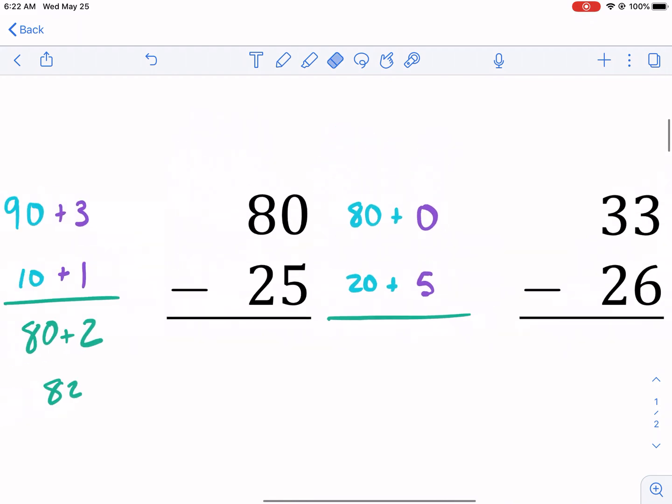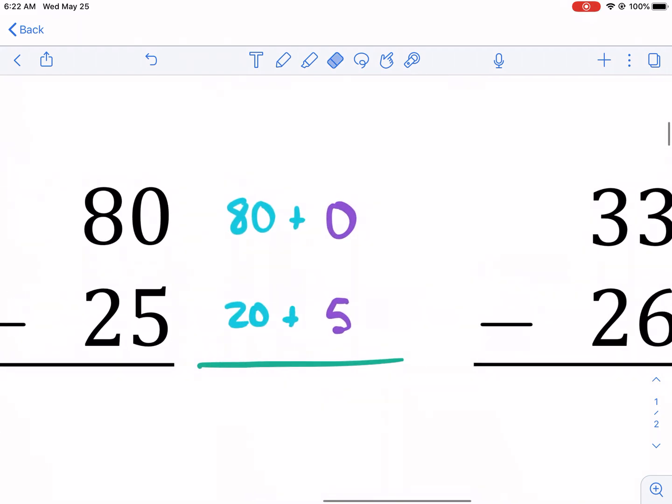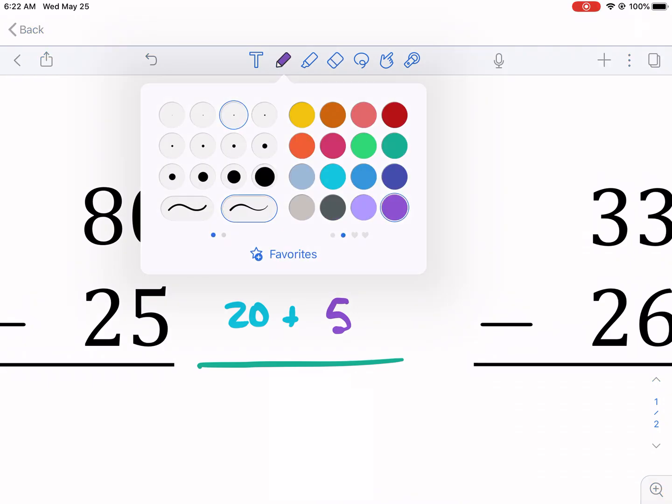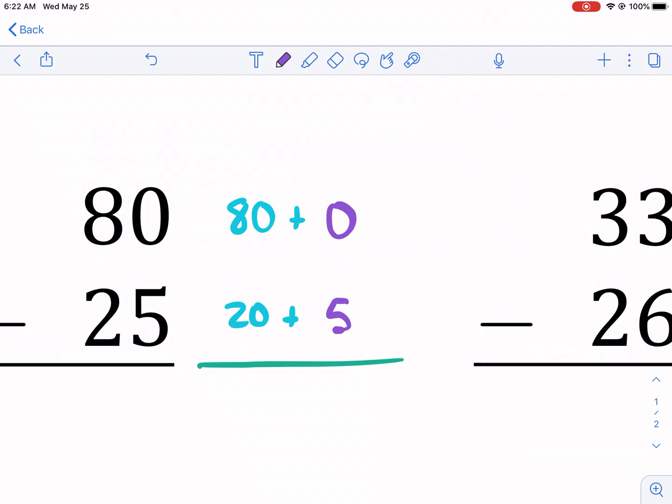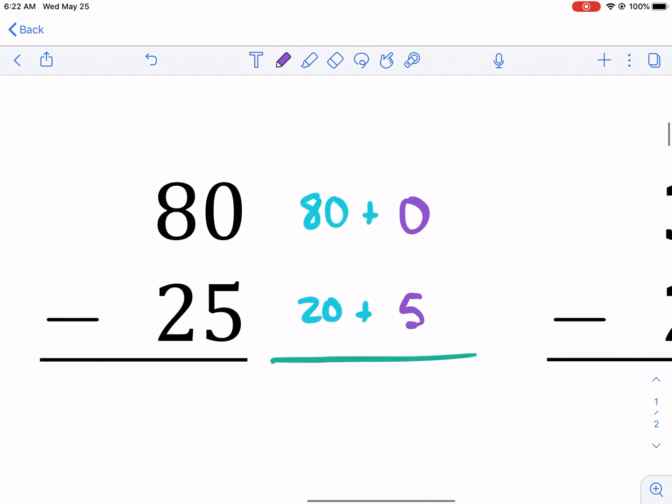We need to borrow. If we can't do the subtraction, 0 minus 5, which we can't in this case, because 0 is smaller than 5, then what we're going to do is we're going to borrow some from the previous number. And what you do is you borrow 10 from that number. So if you're going up to this place, you're going to borrow 10 from that number.